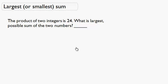Now we're given the product of two integers and we want to figure out what is the largest, or sometimes the smallest, possible sum of the two numbers. So two numbers multiplied together. Let's say a times b is equal to 24. And we want to figure out what is the largest possible sum of a and b.